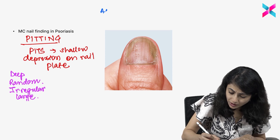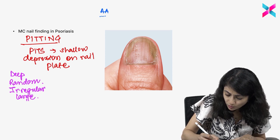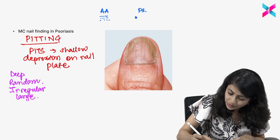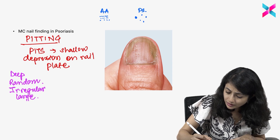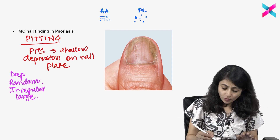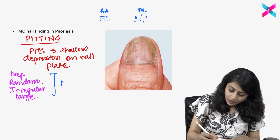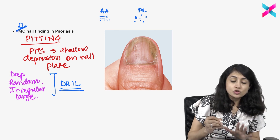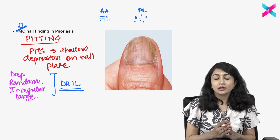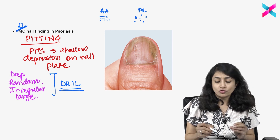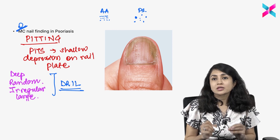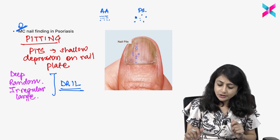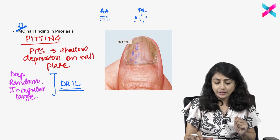In alopecia areata, the pits are small, regular, and very geometric. Whereas in psoriasis, the pits are deep, random, irregular, and large. You can remember this with the mnemonic DRILL. Two to three important things here: the question asked is the most common nail finding in psoriasis, which is pitting. They sometimes ask the difference between types of pits — psoriasis pitting is deep, random, irregular, and large. These are all shallow depressions visible on the nail plate.